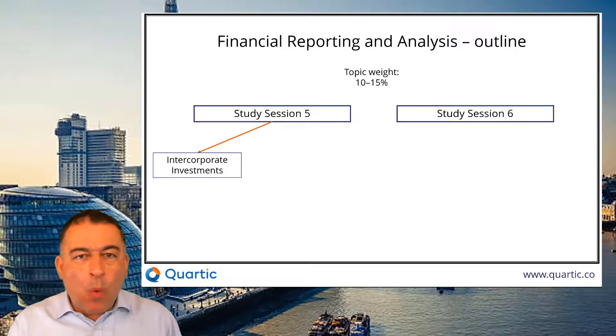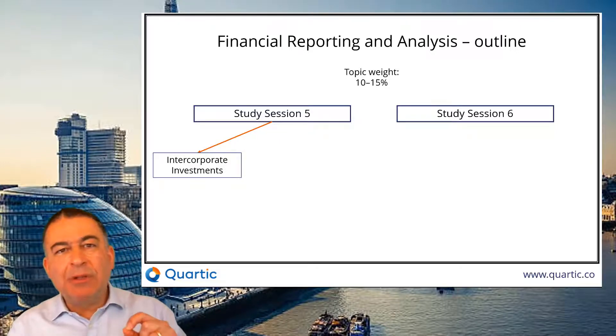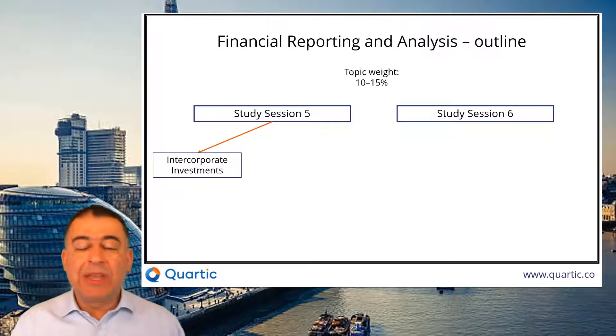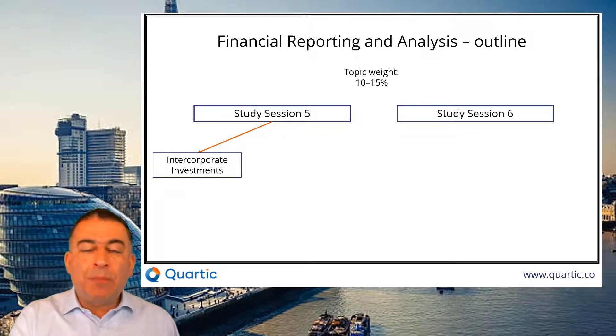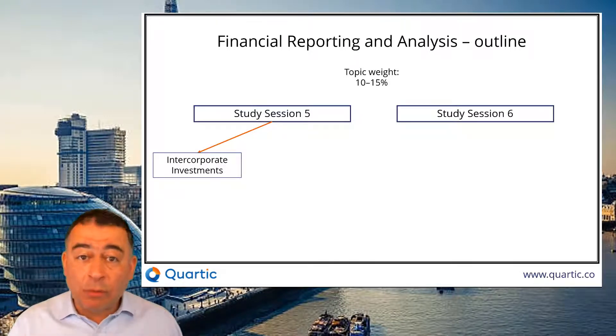At Level 1, we looked at specific numbers — long-lived assets, inventories, and things like that. Here, we look at the big picture. So if one company buys another company, what is the impact on the overall financial statements?